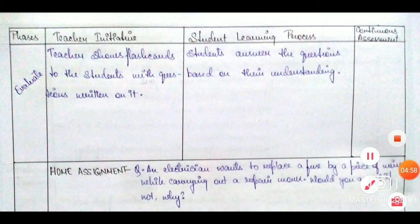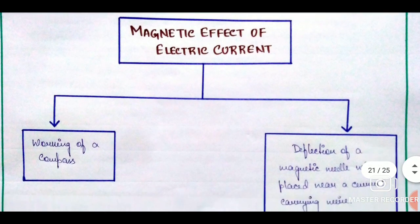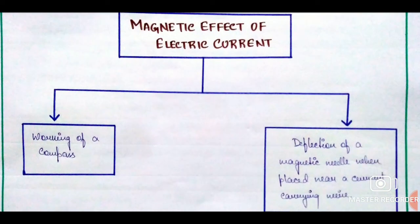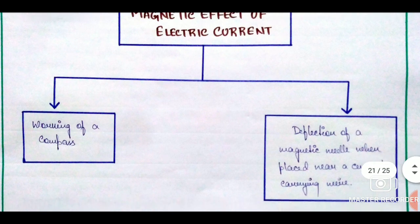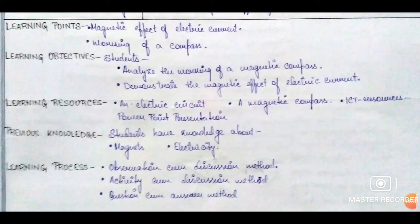Here ends the second lesson plan. We are moving on to the third lesson plan from the same chapter, electric current and its effects. In this lesson plan, we are going to discuss the second major effect of electric current — that is the magnetic effect. Please take a screenshot or pause the video if necessary. After the concept map, we will write the usual details like date, class, time, period, unit, subject, topic, and subtopic, before moving on to the learning points and then learning objectives.